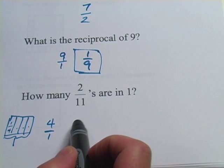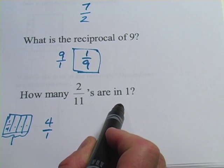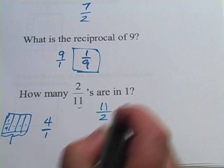The same trick works on any kind of fraction. If you ask how many 2 elevenths are in 1, it's going to be the reciprocal of that. So the answer will be 11 halves.